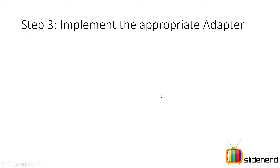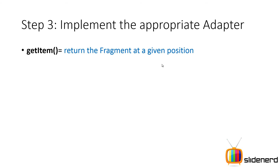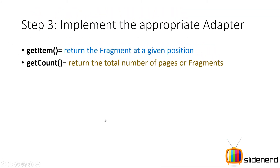The third step, after deciding which adapter to use, is to implement certain methods. One of them is getItem(), which returns the given fragment at a position — similar to how ListView works. The View Pager tells the adapter: show me the page at position 0, position 1, position 2 through the getItem() method. Then there is the getCount() method, which returns the total number of pages or fragments. In our case we have three fragments, so getCount() should return 3.